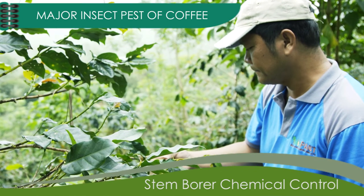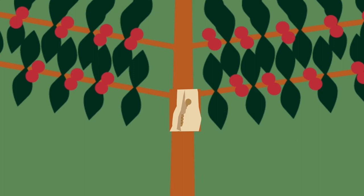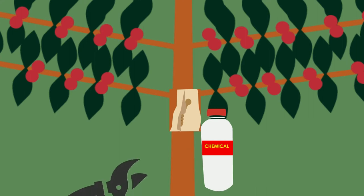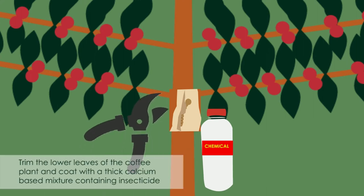Number two, stem borer chemical control. Focus on the stem where the insects are hatching after egg laying. Apply a granular systemic insecticide that provides some control; however, it needs to be combined with other measures. Trim the lower leaves of the coffee plant and coat with a thick calcium-based mixture containing insecticide to seal cracks and crevices where the adult likes to lay eggs.